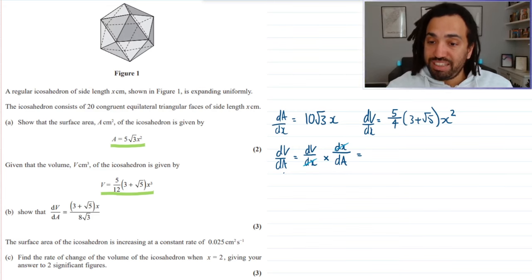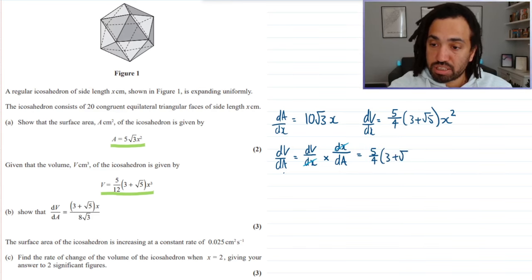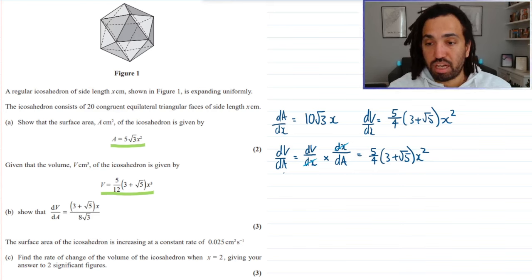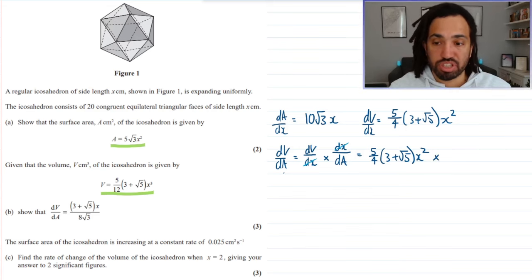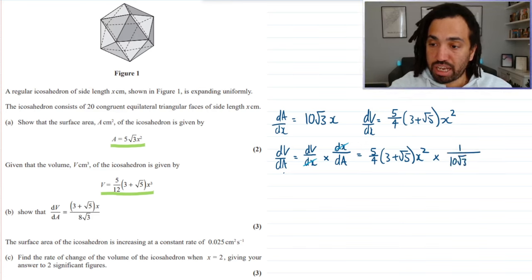So, what is dV over dx? It is 5 over 4, 3 plus root 5 x squared. And that's multiplied by dx over dA. So, we're multiplying by the reciprocal of what we have up here, which is going to give me 1 over 10 root 3 x.